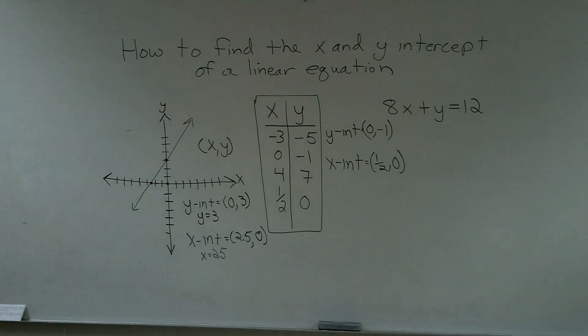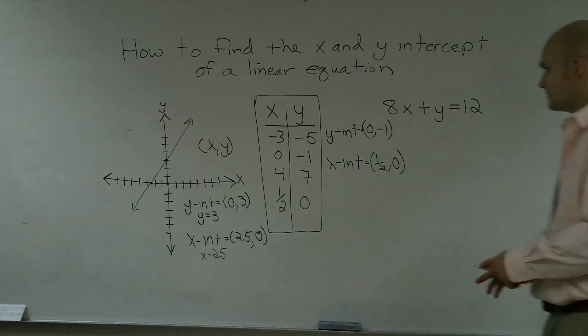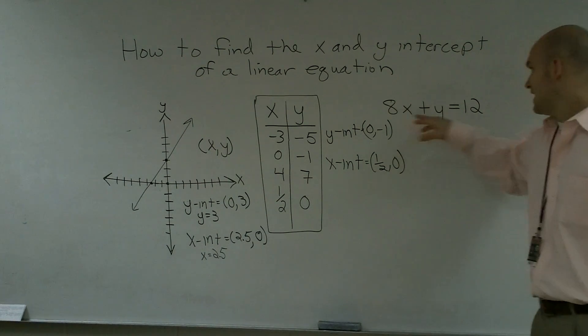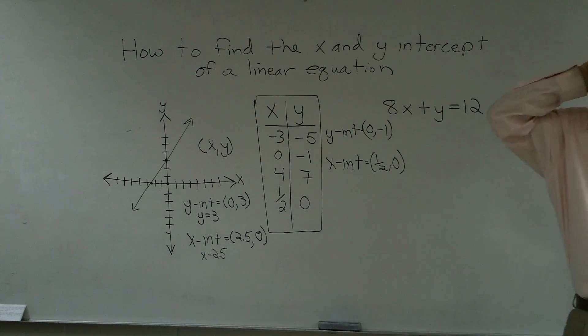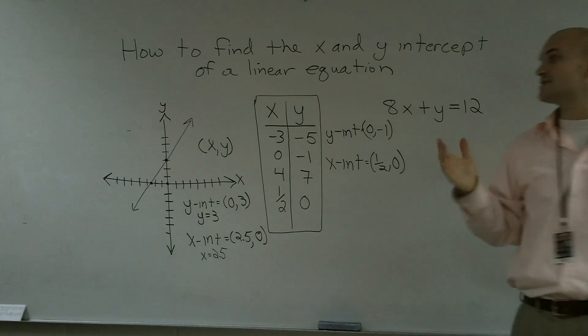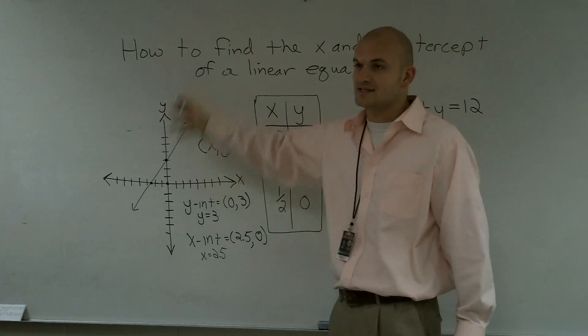Now, last but not least, let's say we're given an equation. And if given this equation, 8x plus y equals 12, and I say find the x- and y-intercepts, you're going to say, all right, Mr. Mullen, I kind of understand with the graph. It's just where it crosses the axis. That's easy.